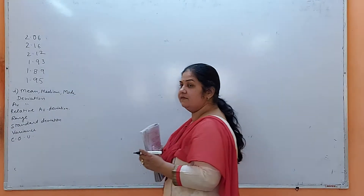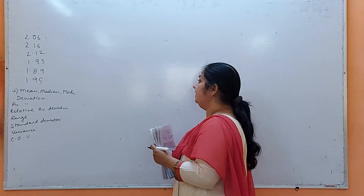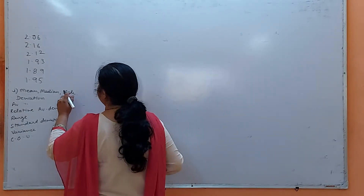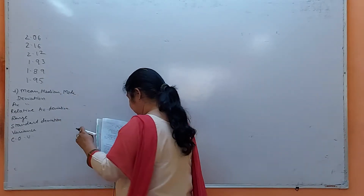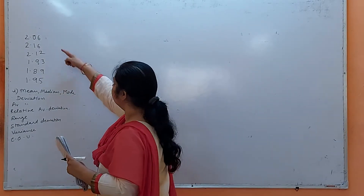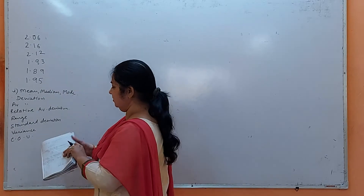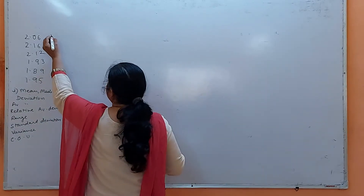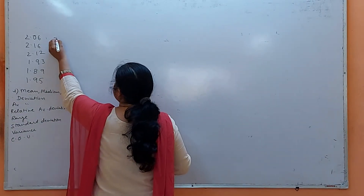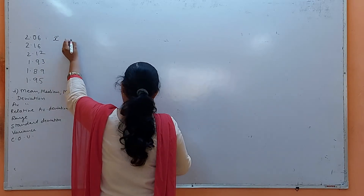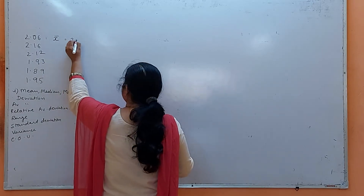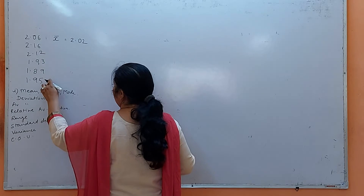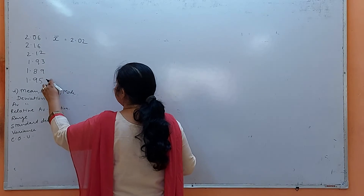First, we will find the mean. Add all these values and divide by 6, since there are six readings. So x-bar comes out to be 2.02.